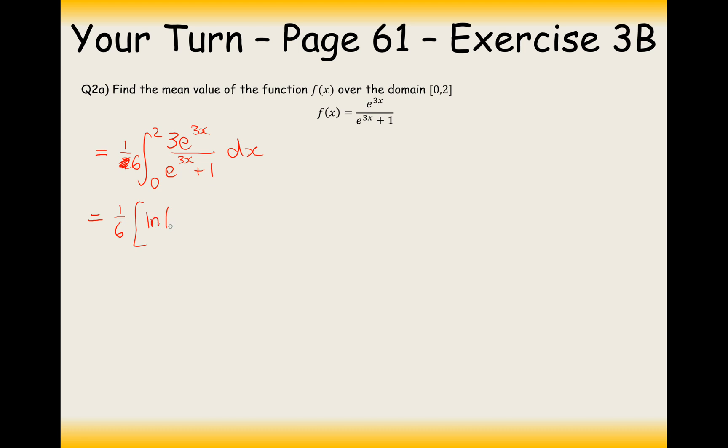And that's going to be in between the boundary of two to zero. Now let's substitute in those boundaries. It's going to be ln e to the six plus one minus e. Anything to the power of zero is one. One plus one is two.